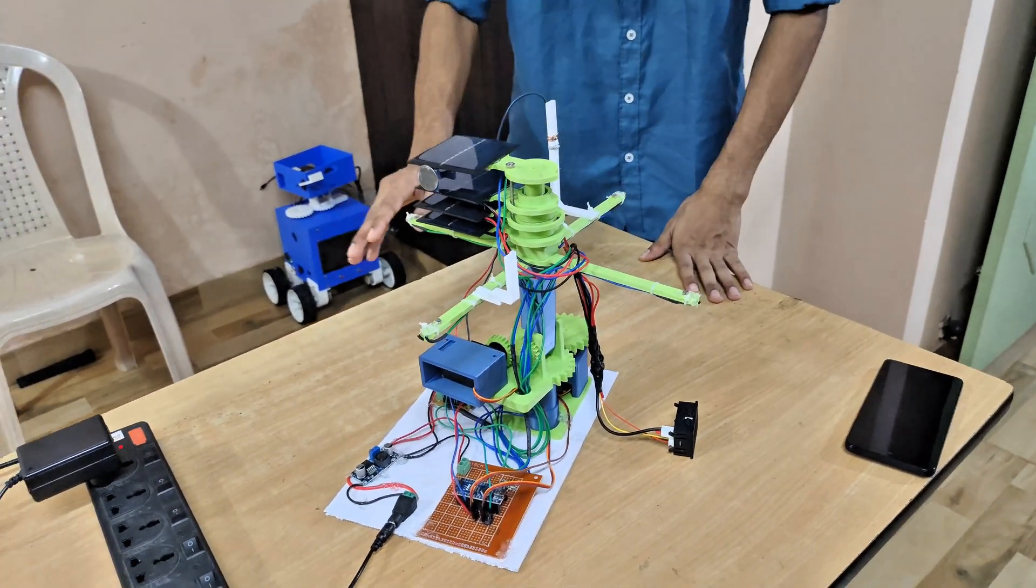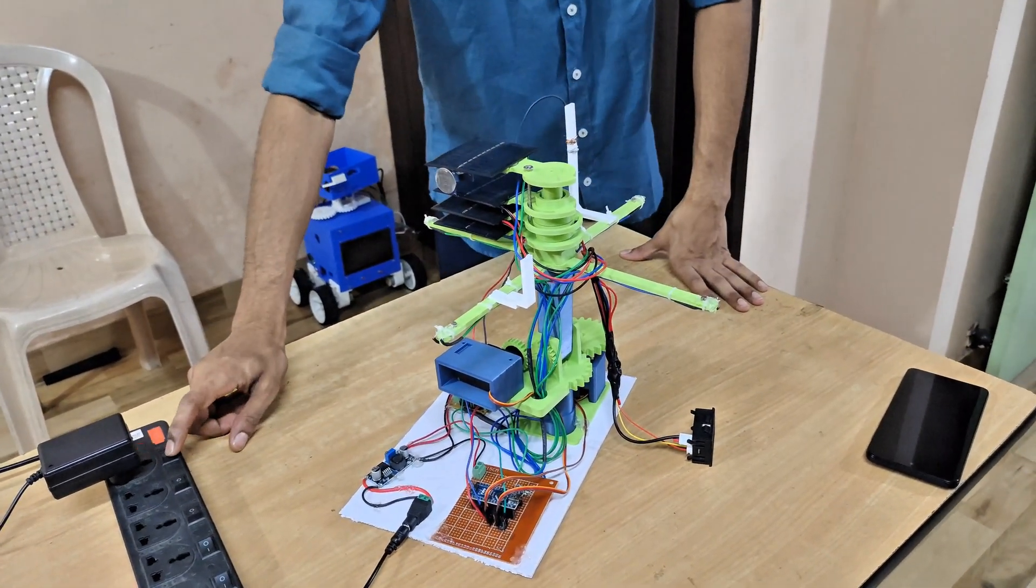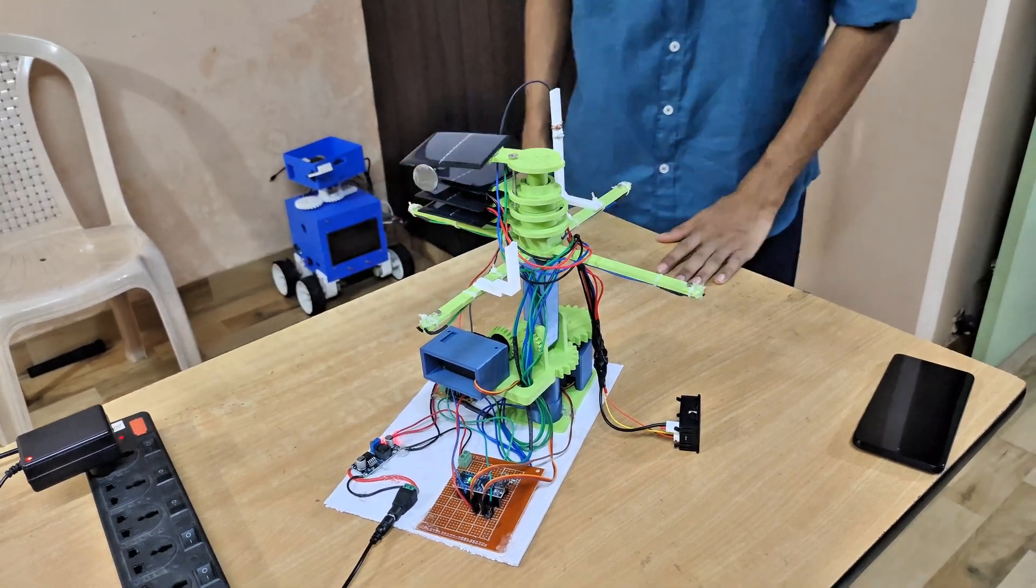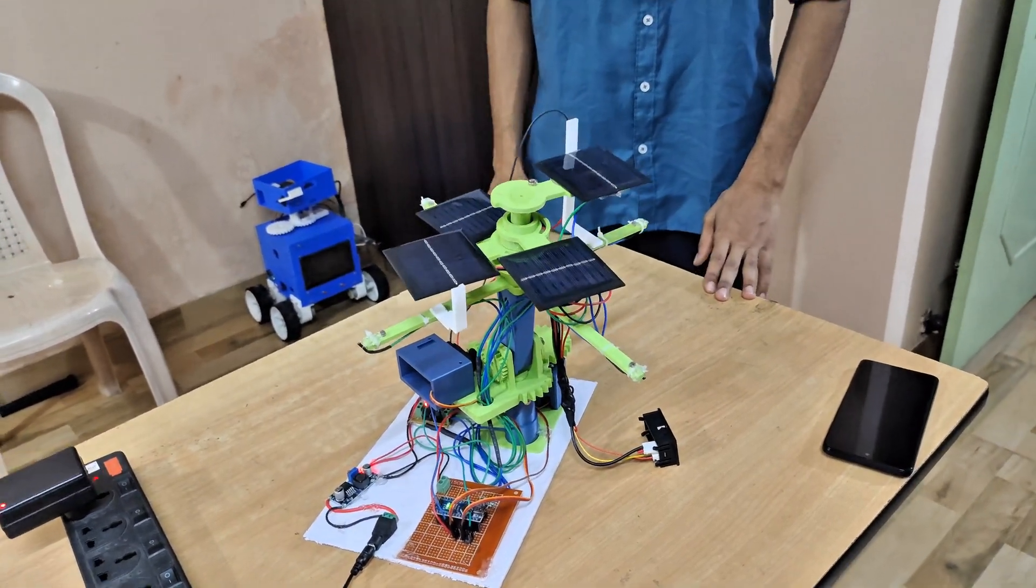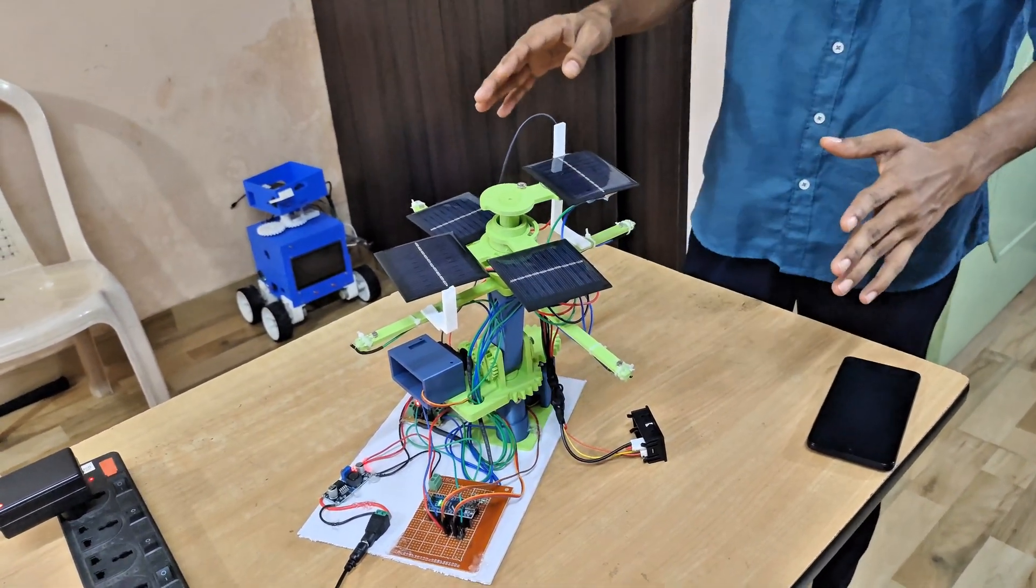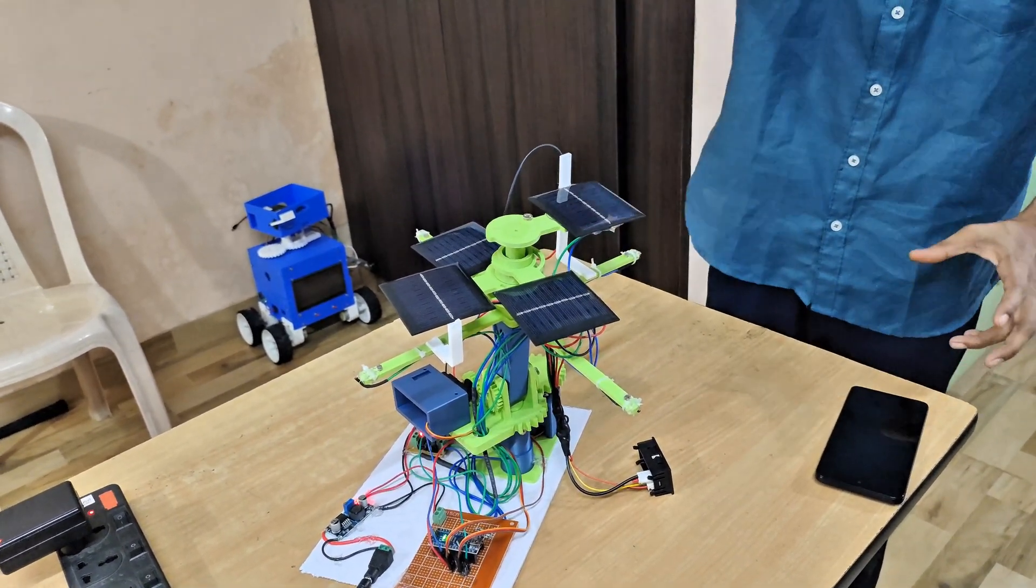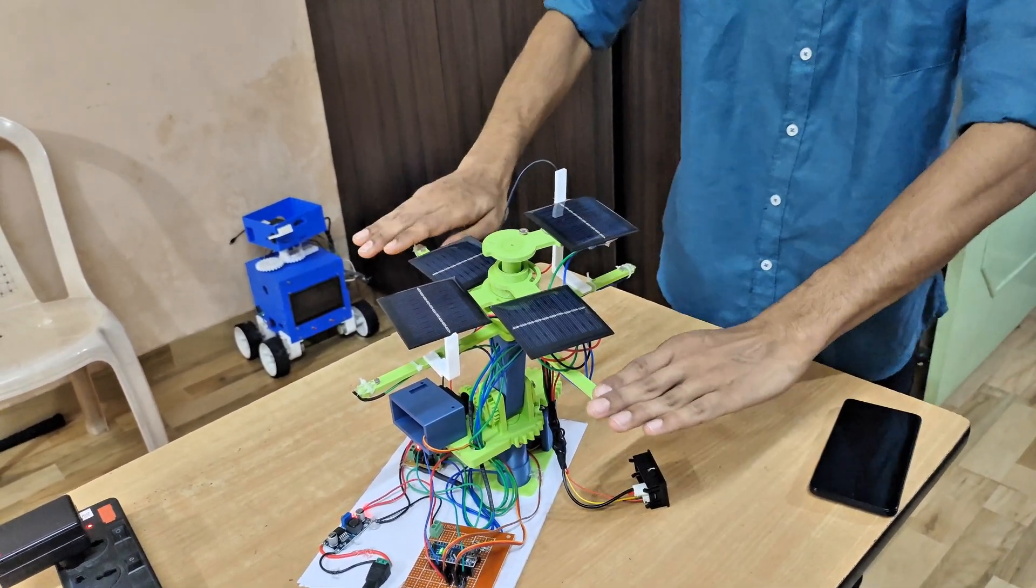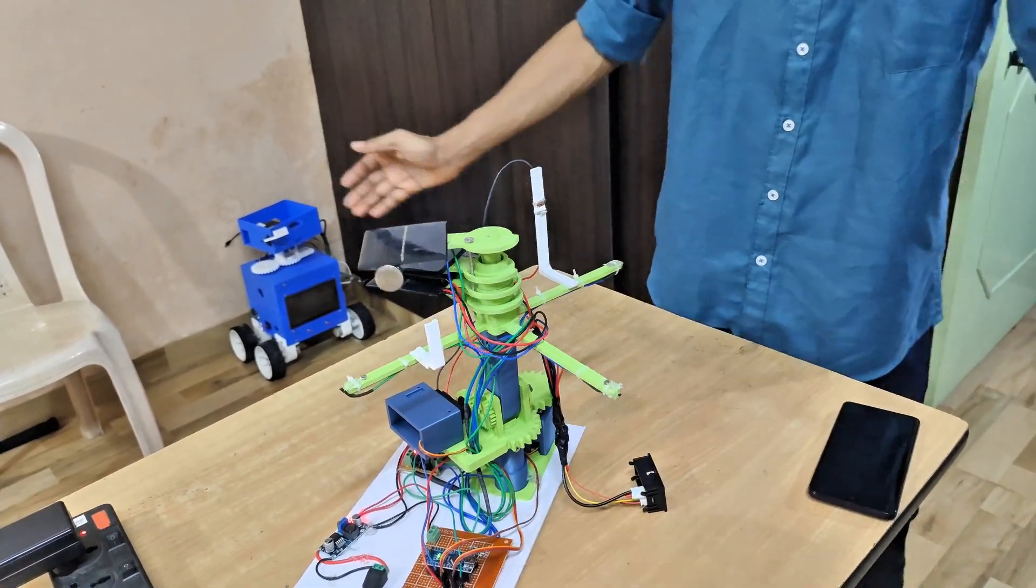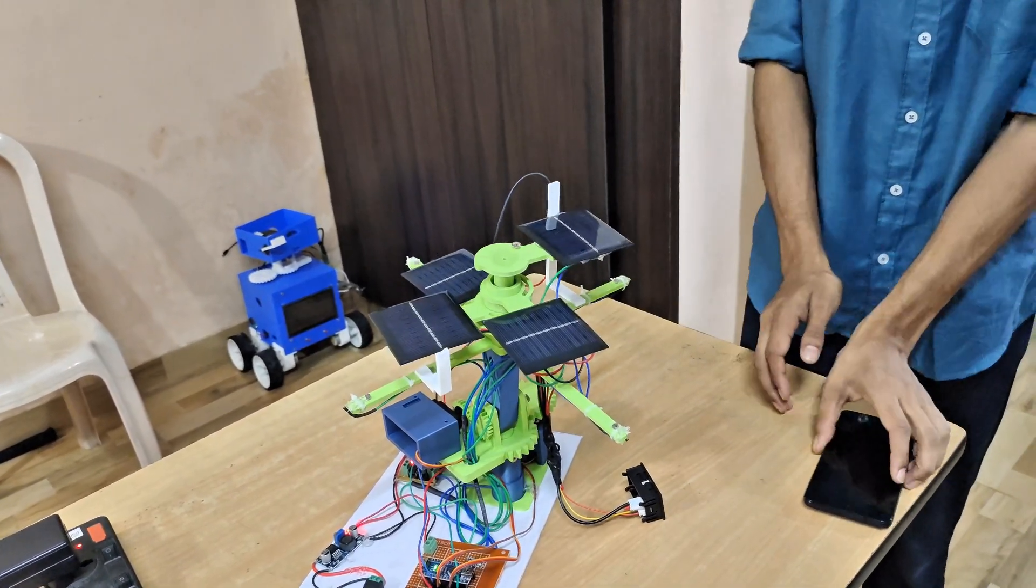Without any delay, let's see how it works. I am going to turn on the power supply. When all four sensors are getting sunlight, like right now we are getting more light, it will open. When I use shadows on the sensors, it will close and open again.